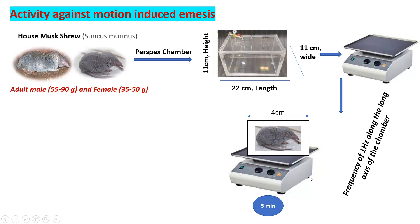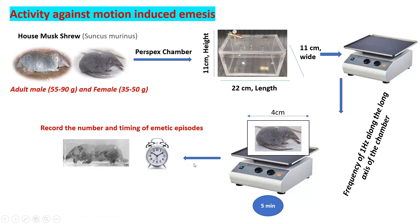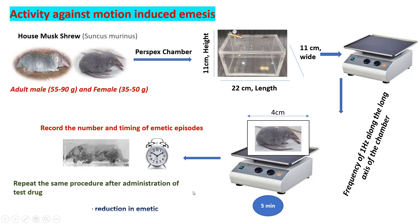During 5 minutes, the animal is observed and the number and timing of emetic episodes are recorded. Then the test drug is administered and the same procedure is repeated for the test compound. The percent reduction in emesis episodes before and after administration of the drug is then calculated. This is the second method and is a very easy method.